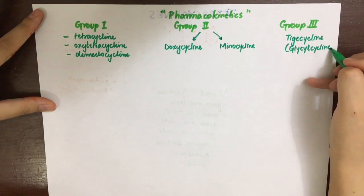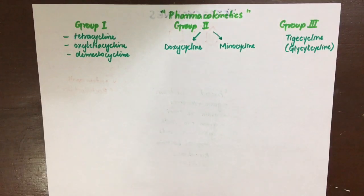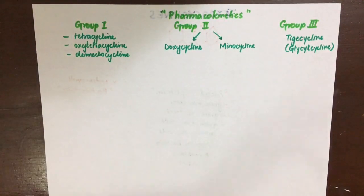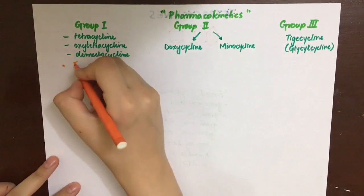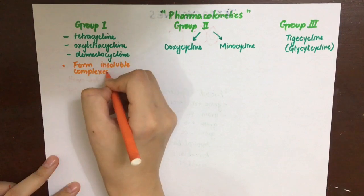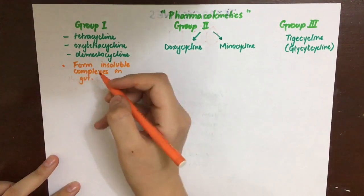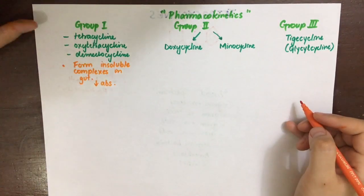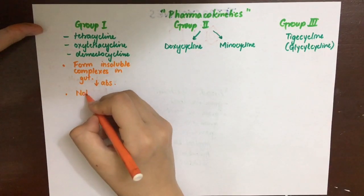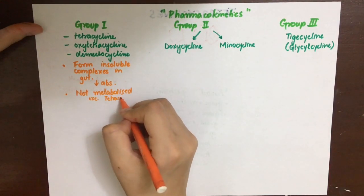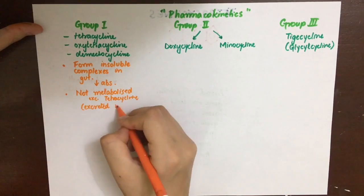For Group 1, remember that these drugs should not be given with food, dairy products, or mineral, calcium, or vitamin supplements because they form insoluble complexes with these ions due to their chelating property. This decreases their own absorption as well as the absorption of these ions. They are not metabolized except tetracycline, and they are excreted in the urine and in the bile.